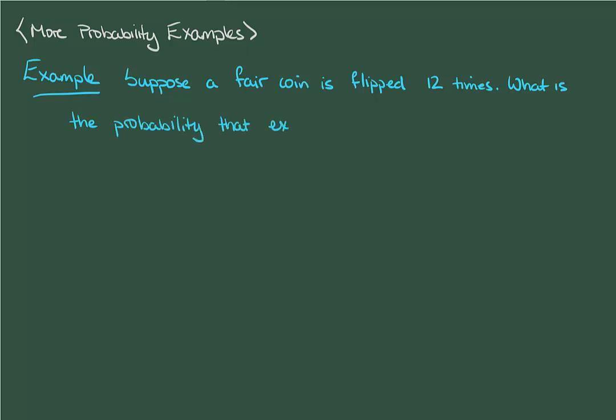Let's do a few more probability examples so we get a feel for how these work. For our first example, let's take a fair coin and let's flip it 12 times. What is the probability that exactly 4 of these flips result in tails?